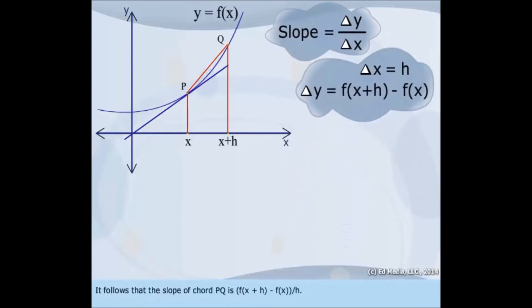It follows that the slope of the chord PQ is f(x + h) minus f(x) over h.